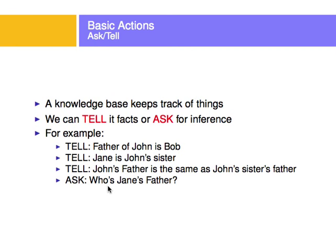It knows the relation — the father of John is Bob, and that Jane is John's sister. So it seems like the father of Jane might be Bob. It also knows that John's father is the same as John's sister's father. So we ask, who is John's sister? That is Jane. So the father of John is the same as John's sister's father — and that is Bob. That is an inference.